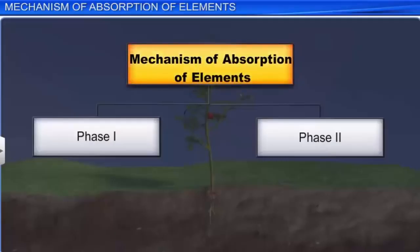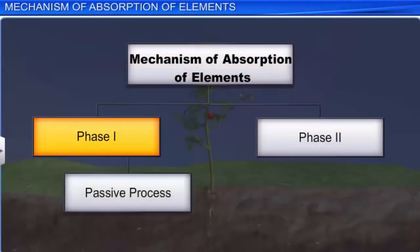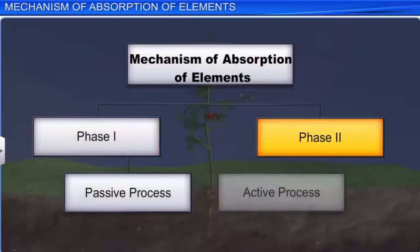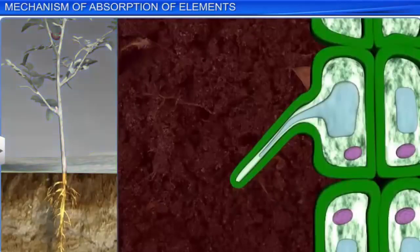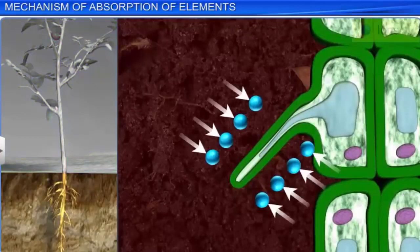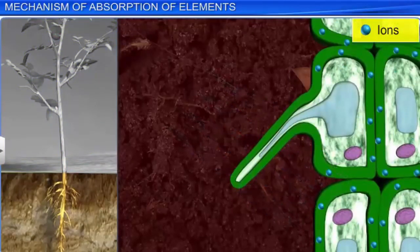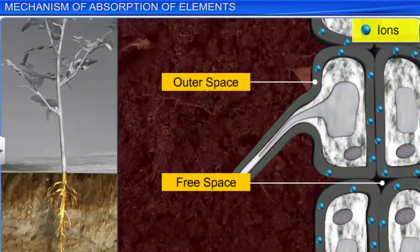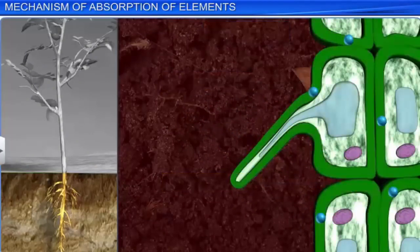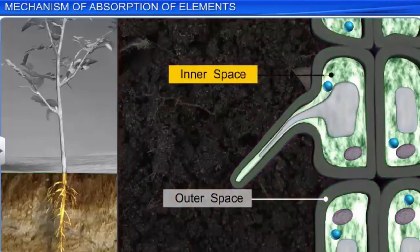Studies on the mechanism of absorption of elements in plants have revealed two main phases of absorption. The first phase is a passive process, and the second phase is an active process. The first phase involves a rapid uptake of ions from the soil or atmosphere to the outer or free space of cells, called the apoplast. The second phase is the slow movement of the ions from the outer space to the inner space of cells, the symplast.